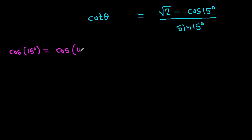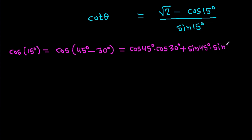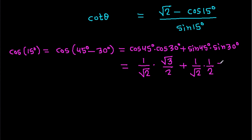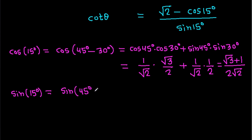We know that cos 15 degrees equals cos(45 minus 30) degrees, which equals cos 45 times cos 30 plus sin 45 times sin 30, giving (root 3 plus 1) over 2 root 2. And sin 15 degrees equals sin(45 minus 30), which equals (root 3 minus 1) over 2 root 2.